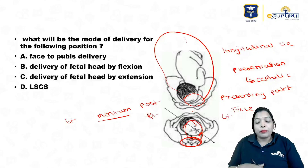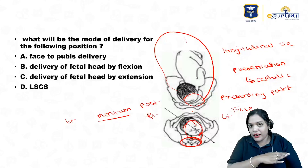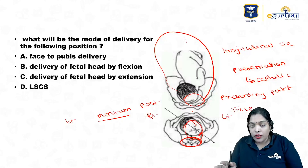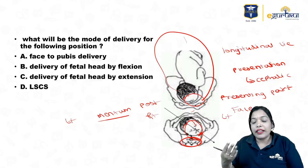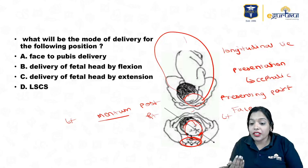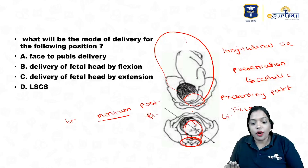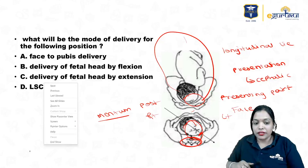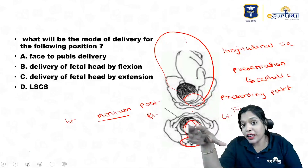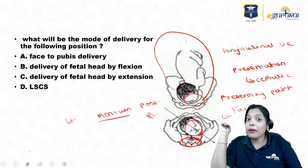To summarize: first ask yourself what is the presenting part; once you determine the presenting part you know the denominator. Then observe which side the denominator is on — the patient's right is the screen's left. Then determine whether the denominator is towards the pubic symphysis or sacral promontory, giving you anterior or posterior. So this is left mento posterior. Now the question is asking not just the position but the management — what is the management for this position?